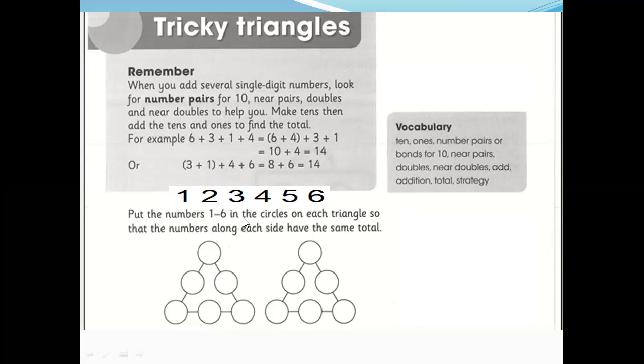Put the number 1 to 6. It's like this. 1, 2, 3, 4, 5, 6. And the circle. On each triangle. So that the number along each side has the same total. We just put here the numbers. Once we put one number, we don't put again. But the answer should be same. For example, if we plus this side, answer should be same. If we plus this side, answer should be same.